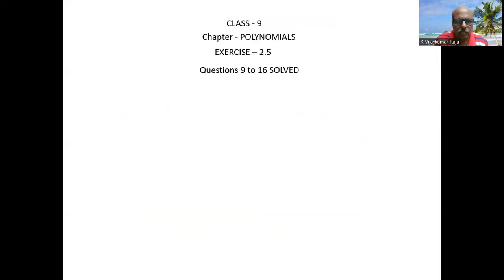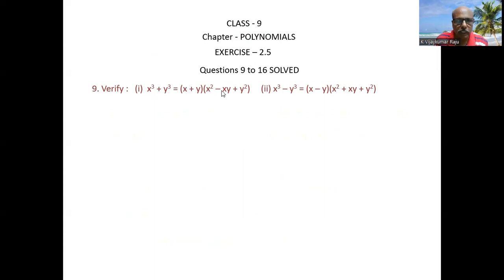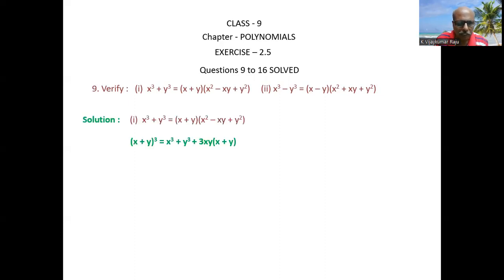Now let us go to question 9: prove x³ + y³ = (x+y)(x² - xy + y²). We use the identity (a+b)³ = a³ + b³ + 3ab(a+b). Substituting x and y: (x+y)³ = x³ + y³ + 3xy(x+y). We want x³ + y³, so rearranging: x³ + y³ = (x+y)³ - 3xy(x+y).